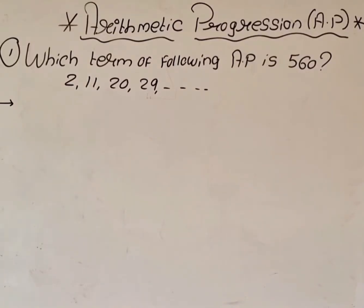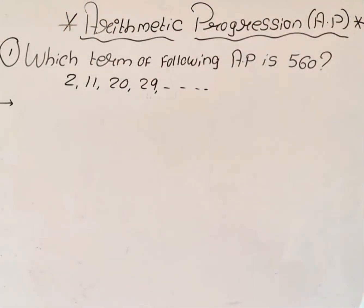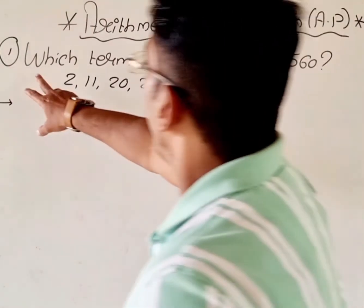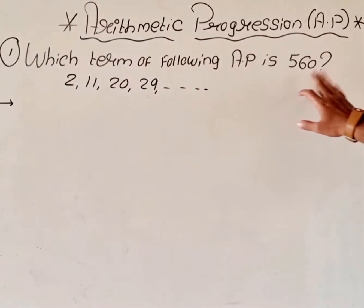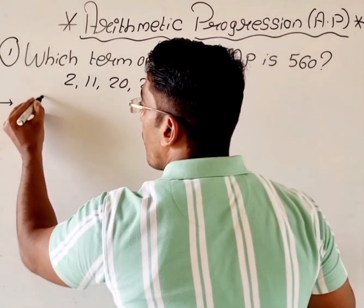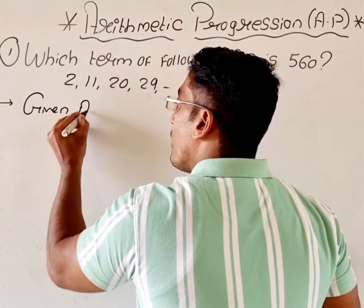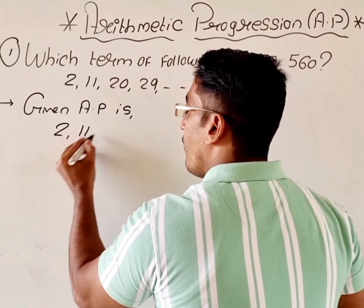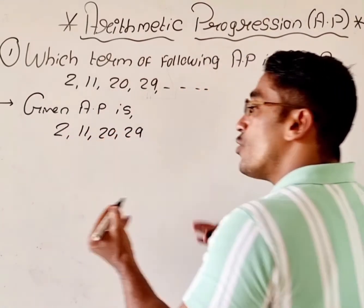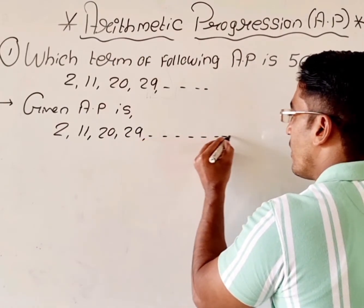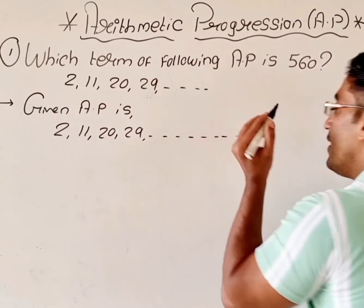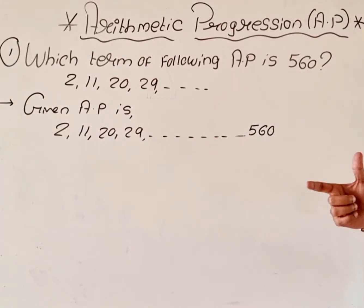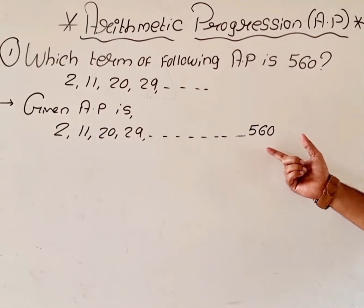Hello students. In today's lecture we will see some more sums on AP. The first sum is: which term of the following AP is 560? The AP given to us is 2, 11, 20, 29, and so on. Somewhere in this AP we are going to get 560, and we have to find out which term is 560.